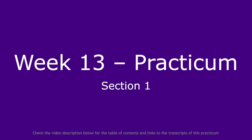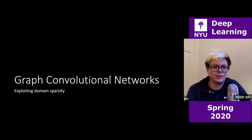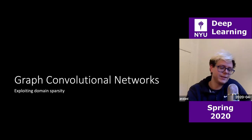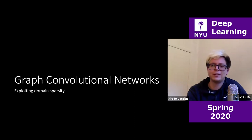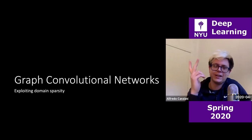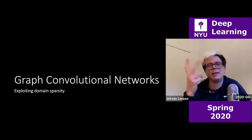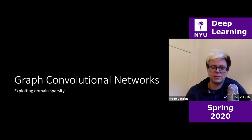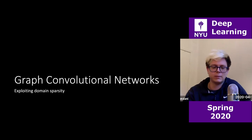So what are we talking about today? Graph convolutional networks — exploiting domain and sparsity. Like yesterday, we saw that Xavier mentioned the three properties of natural signals: locality, stationarity, and what he called hierarchical — compositionality. He used the term compositionality for the whole three things, but it's just jargon. We mean the same thing.